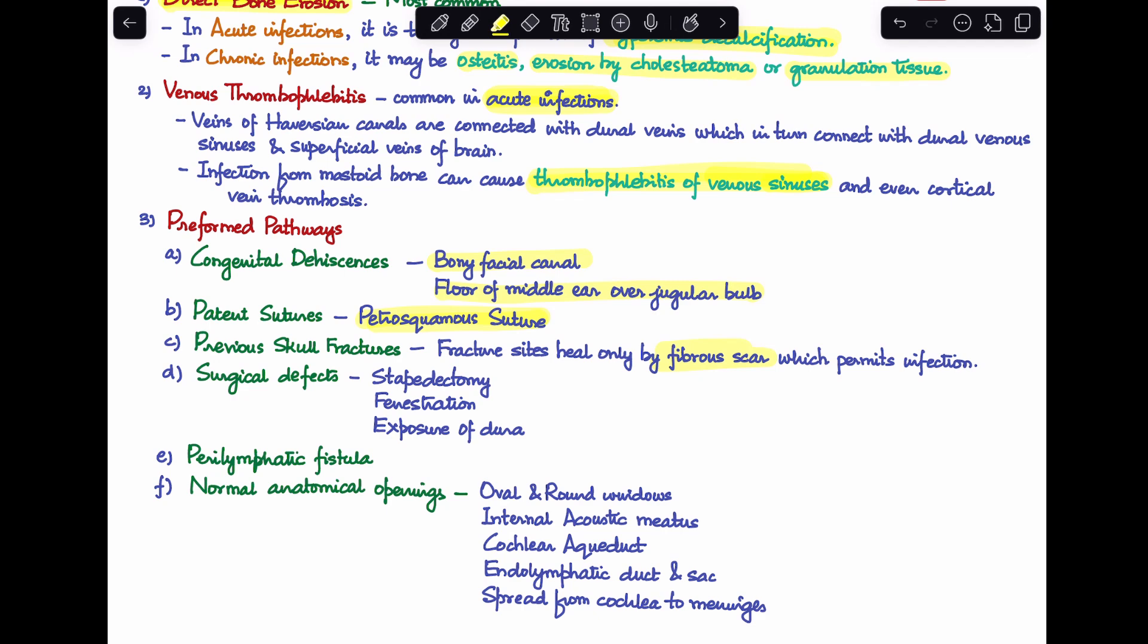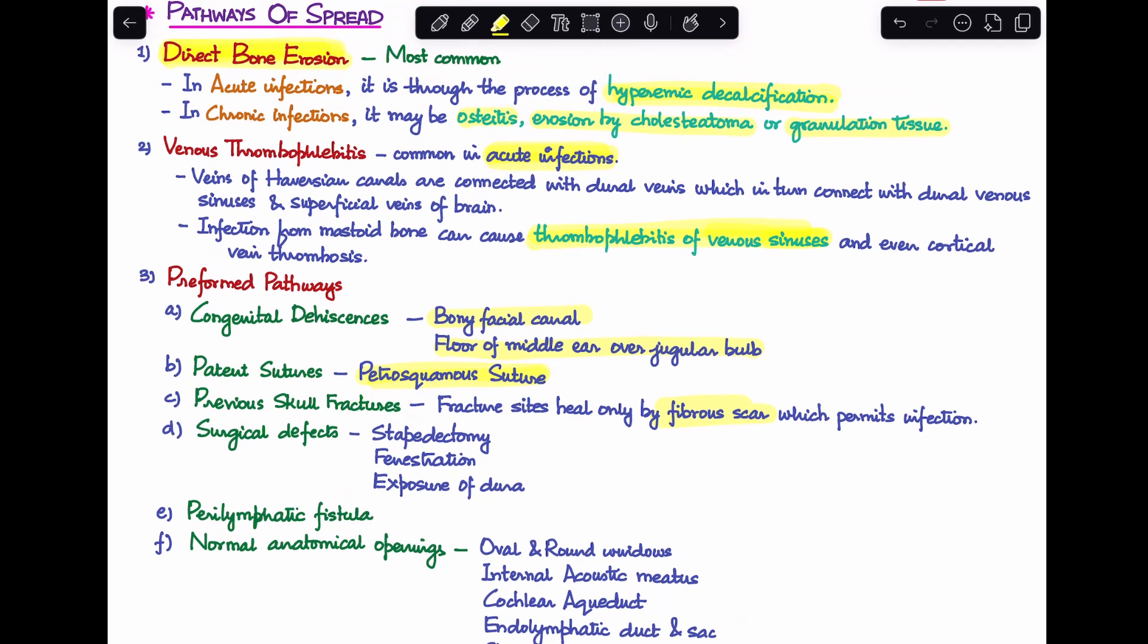So these are all the preformed pathways that can also act as a route of spread of infection in case of CSOM. So there have been three pathways of spread: the most common being direct bone erosion, the second one is venous thrombophlebitis, more common in acute cases, and third is the presence of preformed pathways.